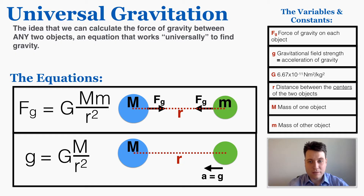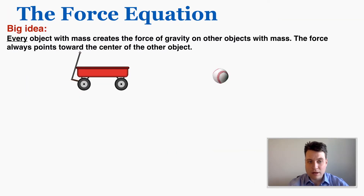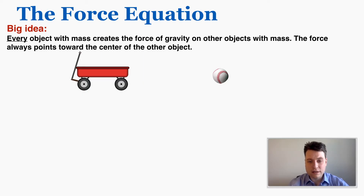These are the two equations we're talking about today, and the variables are all written above. The big idea is that every single object with mass creates a force of gravity on all other objects with mass, and the force always points toward the center of the other object. So a cart and a baseball left next to each other will apply a force of gravity on each other.